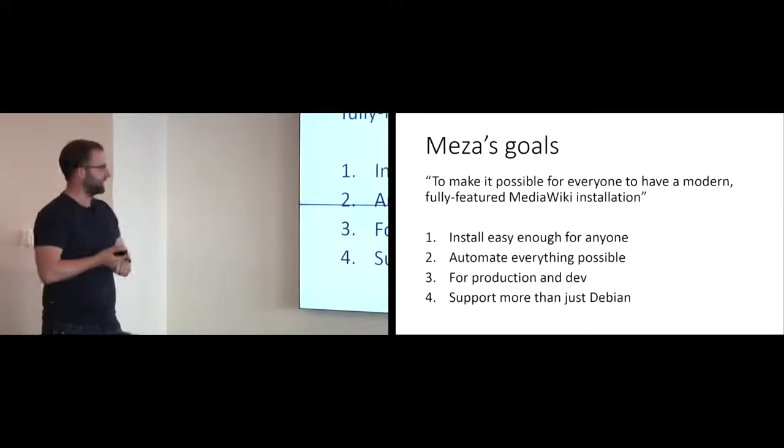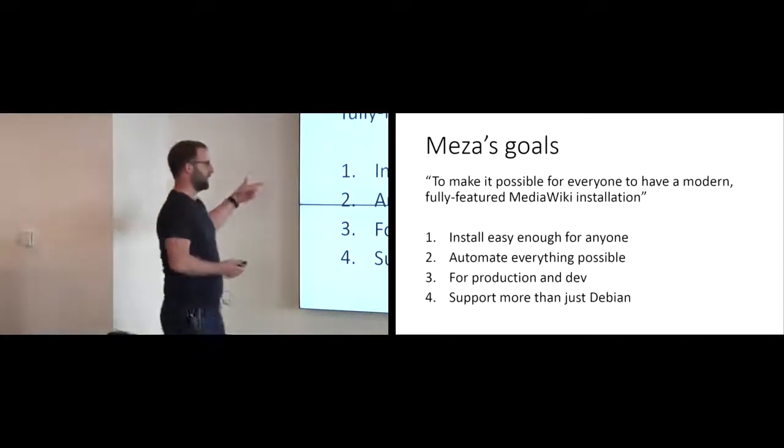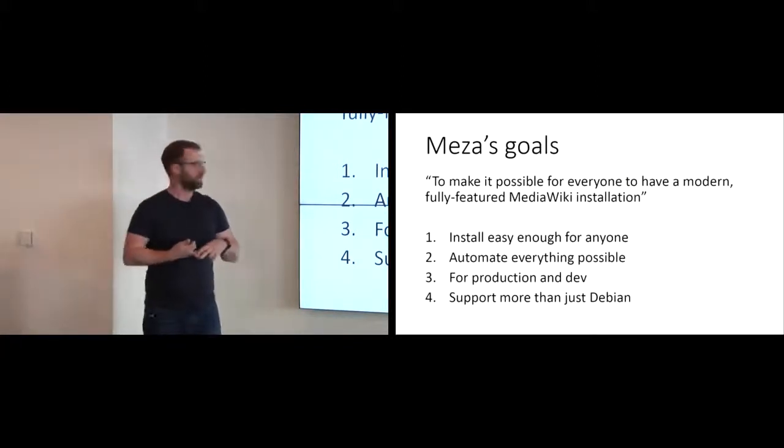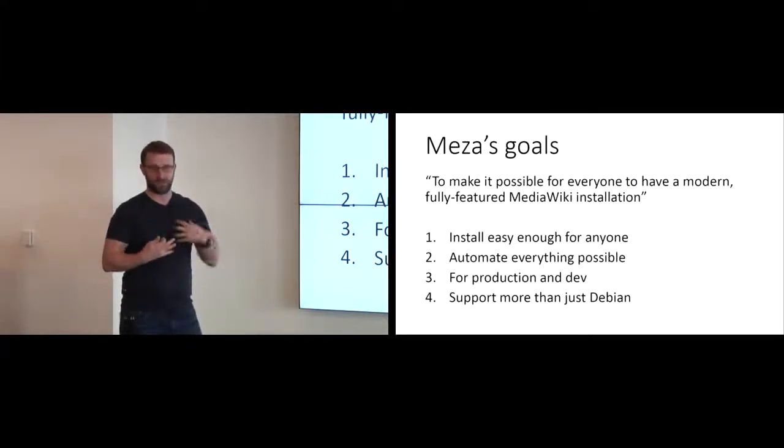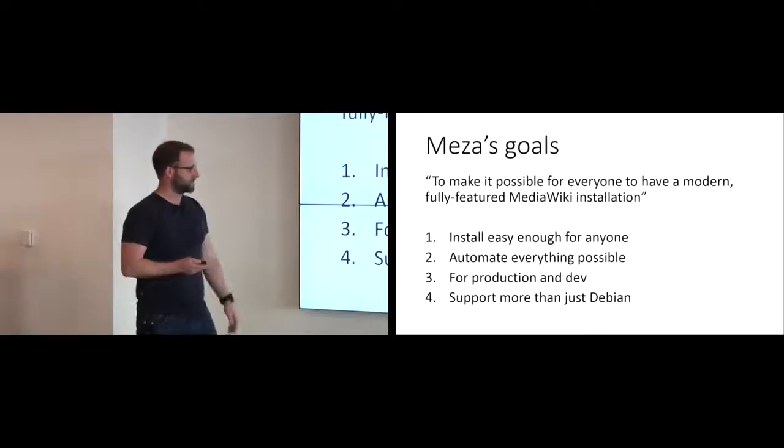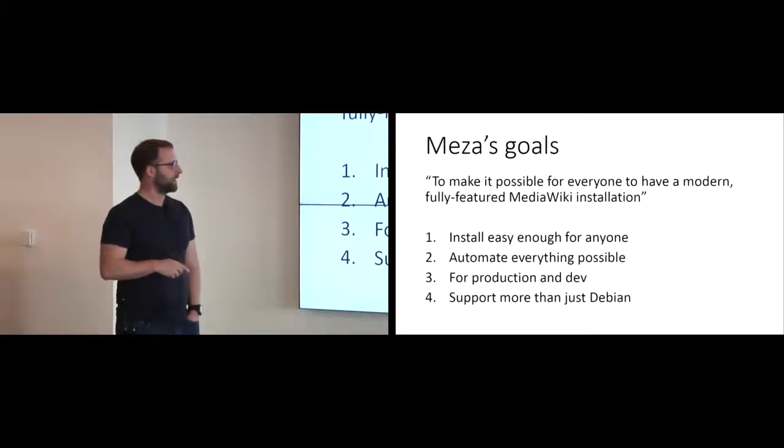So, Meza's goals, that's the tagline that's written at the top of the Git project, but the goal is to make it easy enough for everyone, and I'm going to say we're not really there yet, but it's easier than a lot of things. Automate everything that we can, as much as I can. And if I notice that I'm doing something as an administrator, I try to figure out how to make it so I don't have to do it anymore. I'm kind of trying to eliminate my own job as much as possible. Works for both production and dev, so you can develop something on your own computer, but then also use it for your production site, and then support more than just Debian. And so it's historically, Meza's only worked on Red Hat, because that's what we needed for our particular case. We've added Debian support fairly recently. And the hope would be to add a few more.